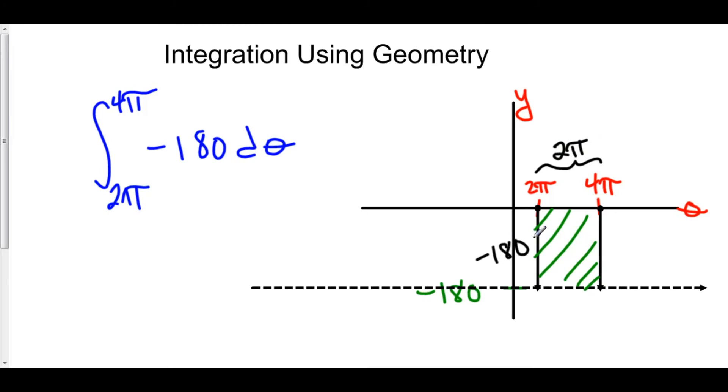Now, keep in mind that if our curve is below the x-axis or the theta axis in this case, then we are looking at a negative function value. This is negative 180 down here. And if we were to look at the area of these rectangles that make up this area,